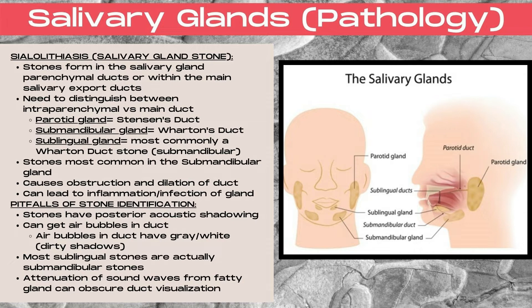In the sublingual gland, most commonly when a stone is visualized, it's actually related to the Wharton's duct — which is a submandibular duct — rather than one of the tiny sublingual gland ducts. A stone within the sublingual ducts is rare. Pitfalls of salivary stone identification include: a stone on ultrasound will have posterior acoustic shadowing, which is dark black or dark gray shadowing. Air bubbles in the duct can mimic the appearance of stones as they are white; however, air bubbles will have a gray or white dirty shadow rather than a black or dark gray shadow like a stone. Another pitfall is that most sublingual stones are actually submandibular stones within the Wharton's duct. Additionally, attenuation of sound waves from a fatty gland signal can obscure duct and stone visualization on ultrasound.